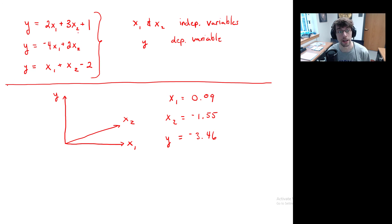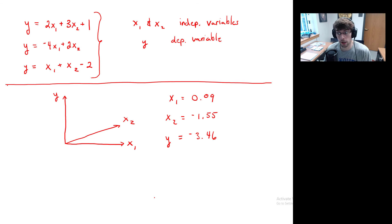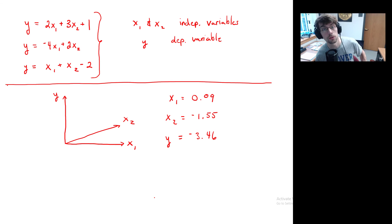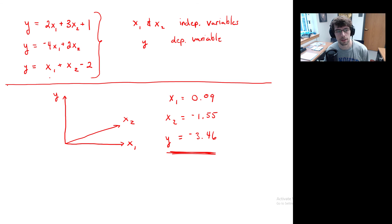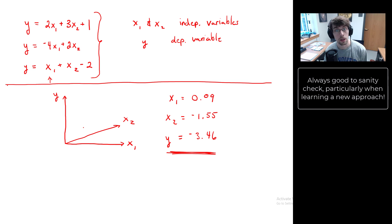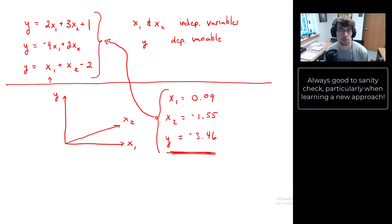Hopefully you see the problem with the graphical approach: number one, it takes a while; number two, if you have more than two independent variables you can no longer use this technique because we can't see in higher than three dimensions. You can't plot in four or six dimensions. You have to do it algebraically.